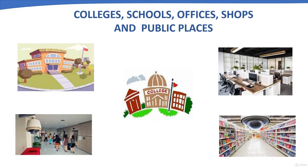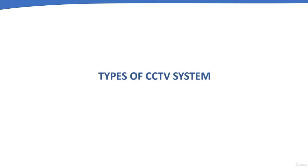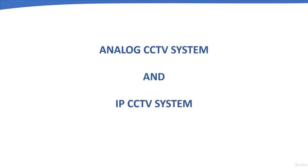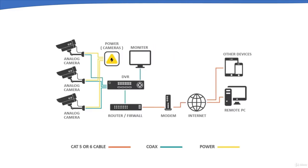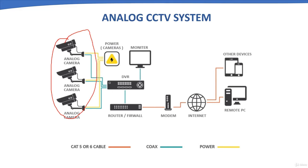CCTV systems are majorly of two types: first, analog CCTV system, and second, IP CCTV system. In an analog CCTV system, video signals are captured from analog cameras and transmitted over coaxial cable to the DVR for live view and recording purposes. A dedicated power supply is used to power the analog cameras, and monitors are connected directly to the DVR for live view or to check recorded video footage.